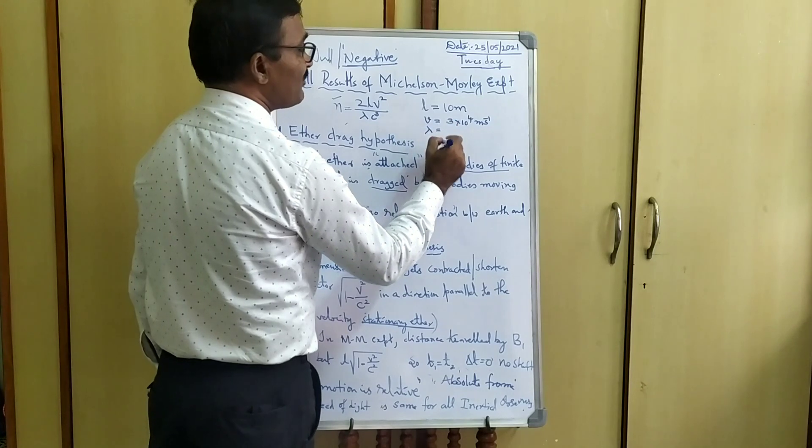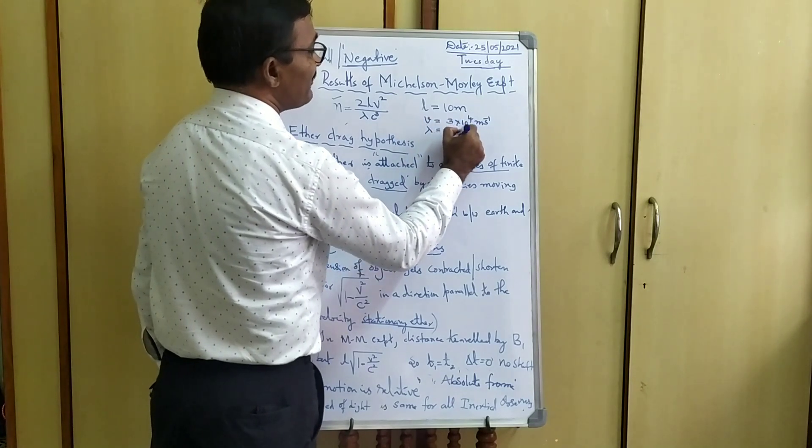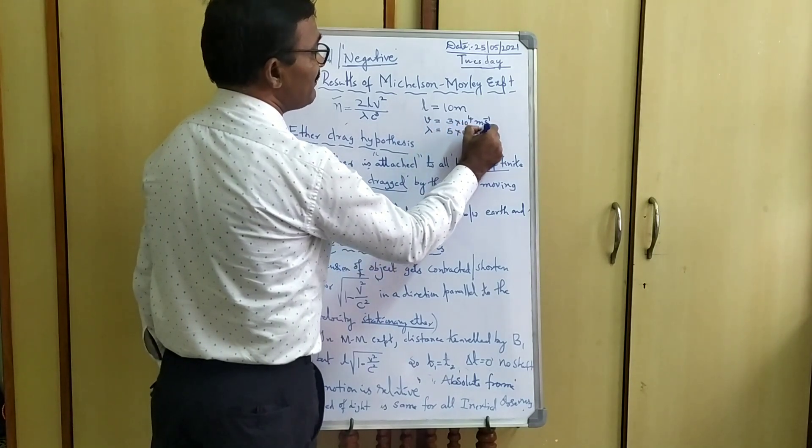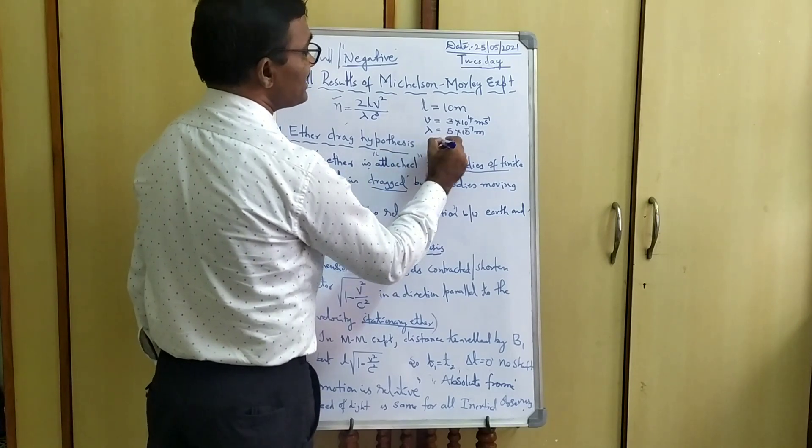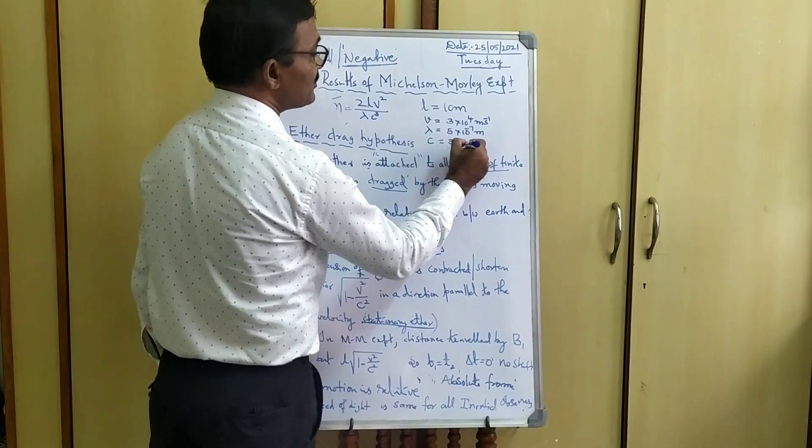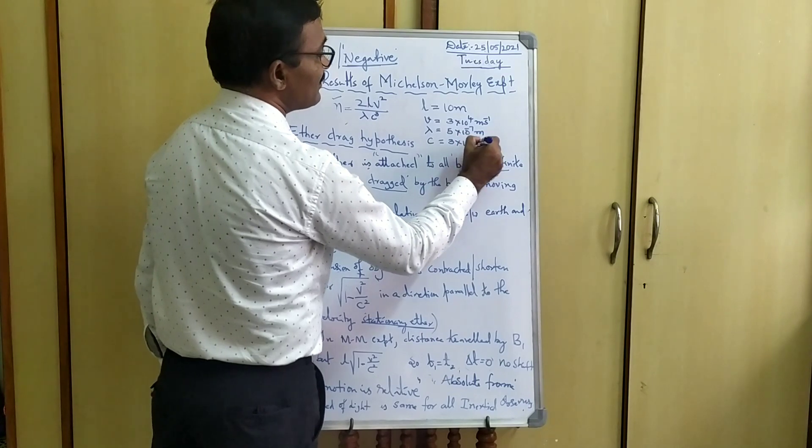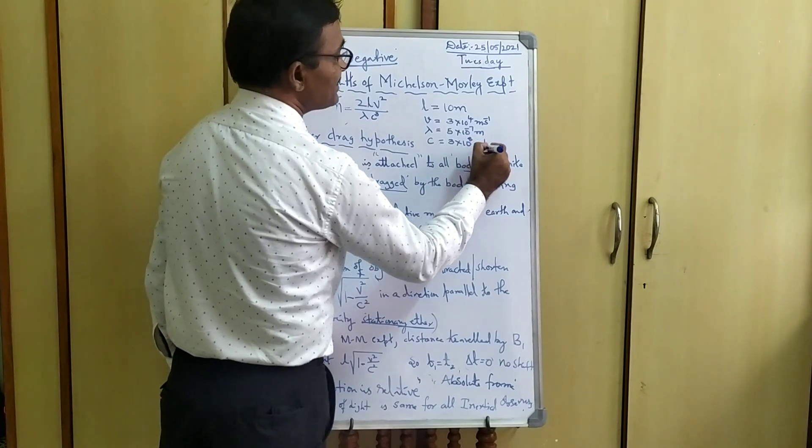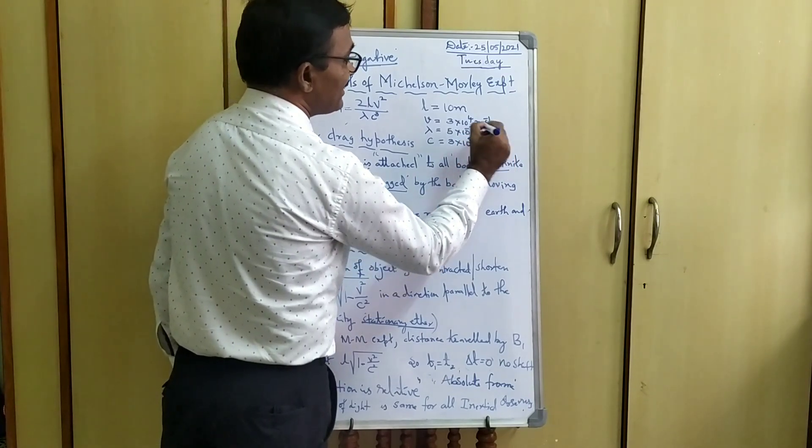Where lambda is the wavelength of light used here, 5 times 10 raised to minus 7 meters. And in addition to this, where C is the velocity of light, its value is the universal value that is equal to 3 times 10 raised to plus 8 meters per second.